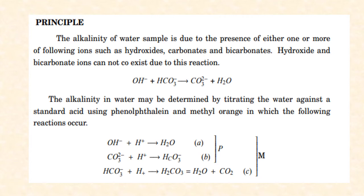Alkalinity of water is caused by anions like hydroxide, carbonates, and bicarbonates. If these ions are present, the water has a pH greater than 7 and is said to be alkaline in nature. If all three ions are present, hydroxides and bicarbonates react together to form carbonate. However, hydroxide and bicarbonate are reactive with each other, so all three ions cannot simultaneously be present.